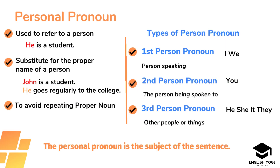A personal pronoun is a pronoun that is related mainly to a particular person. When do we use this personal pronoun? The first point is that it is used to refer to a person. In the first example: 'He is a student.' The word 'he' is used to refer to a person. The second point is that it is a substitute for the proper noun. For example: 'John is a student and he goes regularly to the college.' So to substitute John in the second sentence, the word 'he' is used, and we know that 'he' is a personal pronoun.